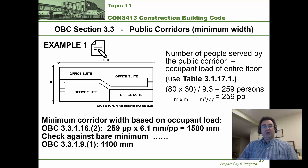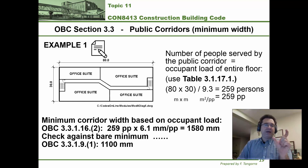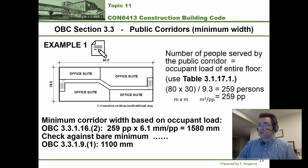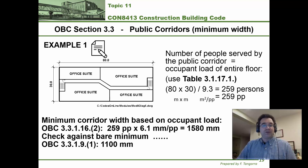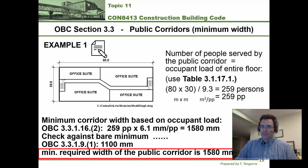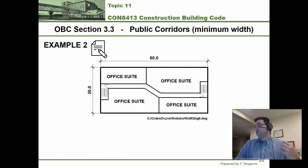Once we have the width based on occupant load, we check it against the bare minimum — the geometric minimum that allows one single person through. Based on sentence 1 under article 3.3.1.9, the bare minimum is 1,100 millimeters. Between 1,580 and 1,100 millimeters, we pick the largest: 1,580 millimeters. Make that final answer obvious and unmistakable. Now let's move on to example 2.